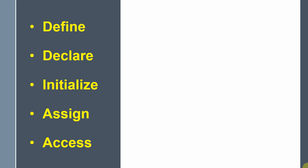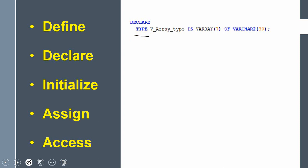Once we define the type, we declare a variable for it, then initialize, assign, and access. Here is the syntax for defining a varray. It must be part of your declaration section. The TYPE keyword indicates a type definition; you give a name, followed by IS VARRAY, then specify the maximum size in parentheses, and declare the element data type. This defines a user-defined data type of varray type.